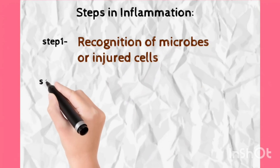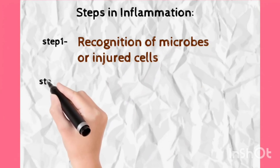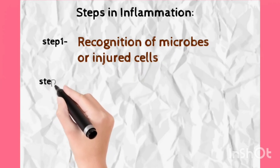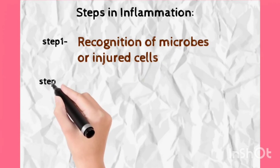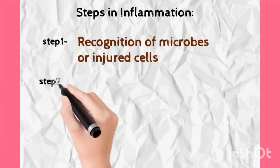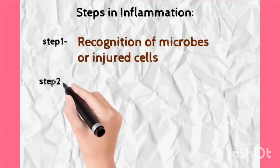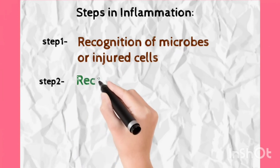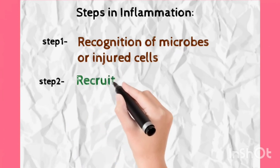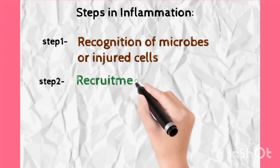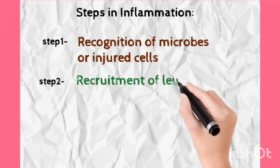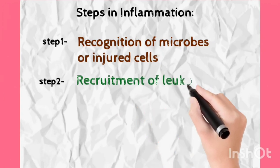The second step is: after recognition, our body recruits leukocytes and other major defense molecules from the circulation. It is just like an army — first identify the enemy, and then recruit your army. This step is the recruitment of leukocytes and other cellular molecules for defense purposes.